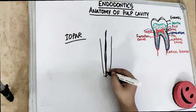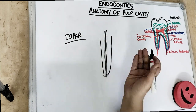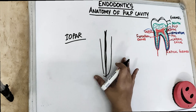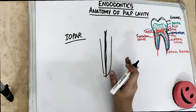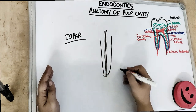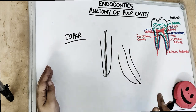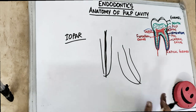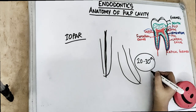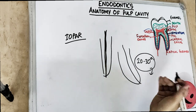In India, we don't follow the practice of using a single file for each tooth. Because we are reusing the file, we must make sure we are not breaking the file into the tooth. So there should be a straight-line access to the canal. However, looking at the anatomy of the root, there are curved canals and curved roots, with curvatures of 20 to 30 degrees.